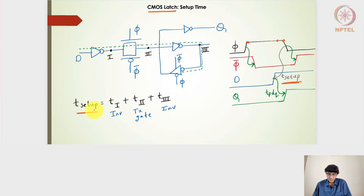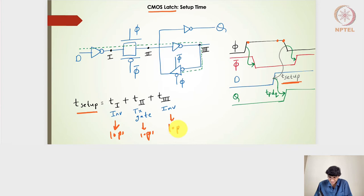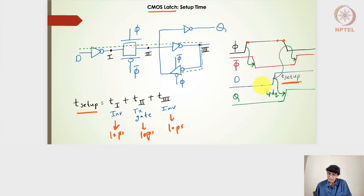Let's validate this with an example. Let's say each inverter and the transmission gate has a propagation delay of 10 picoseconds. So all three stages are 10 picoseconds each, giving a total t_setup time of 30 picoseconds. This means the input should be passed at least 30 picoseconds before the clock goes low, and we can confirm the output will capture the changes in the D signal.